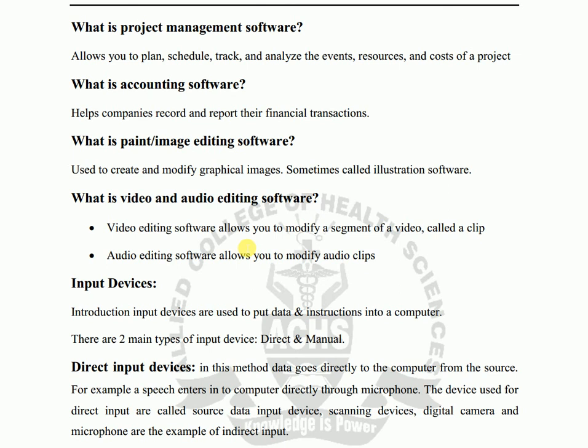Accounting software is used to maintain records. Many companies previously kept records through paperwork, but now it is computerized and digital. Accounting software records financial transactions. What is paint or image editing software? Many software are used for image editing — such as Photoshop, CorelDraw, and Illustrator — which are used to create and modify graphical images, sometimes called illustration software.